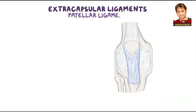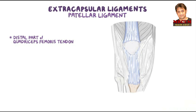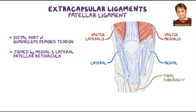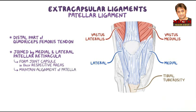The patellar ligament — the distal part of the quadriceps femoris tendon — is a thick fibrous band passing from the apex and adjoining margins of the patella to the tibial tuberosity. On its lateral sides it is joined by the medial and lateral patellar retinacula, which are expansions of the vastus medialis and vastus lateralis respectively, forming the joint capsule in their respective areas and helping maintain alignment of the patella throughout knee flexion and extension.